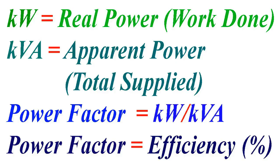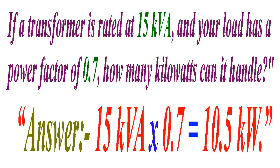Quick recap: KW is the real power — the work done. KVA is the apparent power — the total power supplied. And power factor is efficiency. Here is a challenge for you: if a transformer is rated at 15 KVA and your load has a power factor of 0.7, how many kilowatts can it handle? 15 KVA multiplied by 0.7 equals 10.5 kilowatts — did you get it right? Let me know in the comments. If you found this useful, hit that like button, subscribe for more technical tips, and share this with someone who needs it. Want a full video on power factor correction, UPS sizing, or three-phase calculations? Comment below.